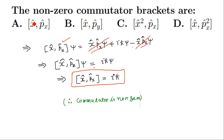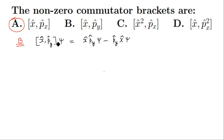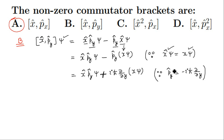Therefore option A is one of the correct choices. Now for commutator b, [x, py] acting on wave function psi. When opened, it becomes x-cap p-y-cap minus p-y-cap x-cap. We know x-cap psi equals x psi, and the operator p-y-cap is given by minus iota h-cross del by del y.